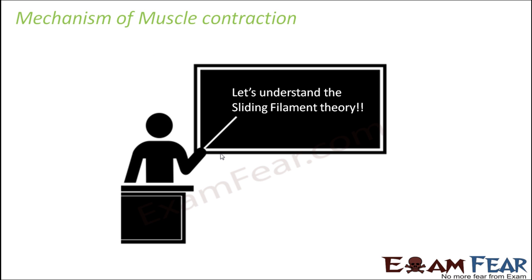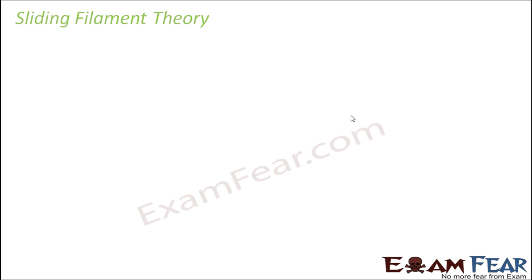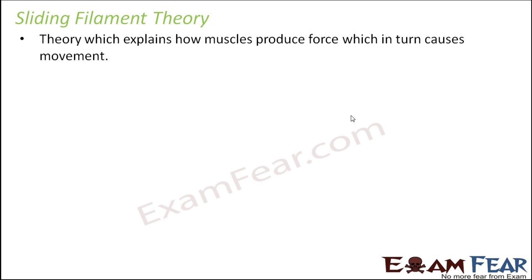The mechanism of muscle contraction — how exactly the contraction of the sarcomere takes place — is explained by a theory called the sliding filament theory. This theory explains how muscles produce force which in turn causes movement. Basically, we will see how the contraction of the sarcomere takes place.